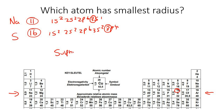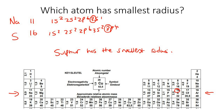So which atom has the smallest radius? Sulfur has the smallest radius. Make sure you understand that: because it has more protons, it pulls the electrons closer — 16 protons is stronger than 11.